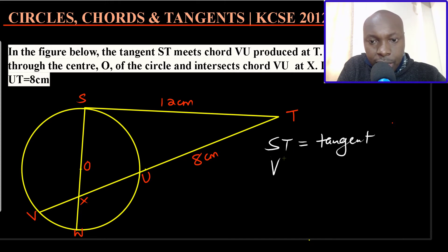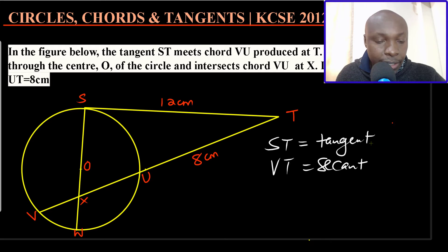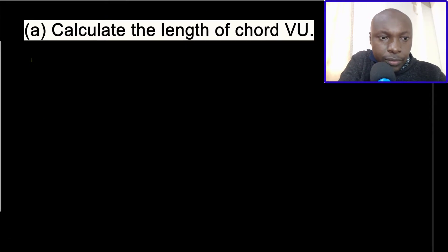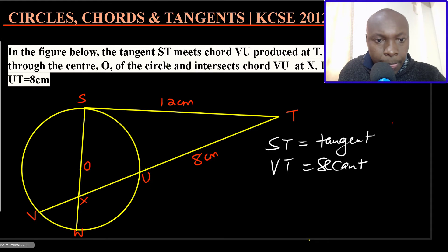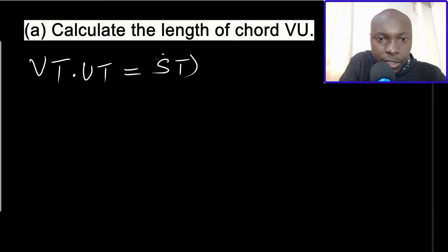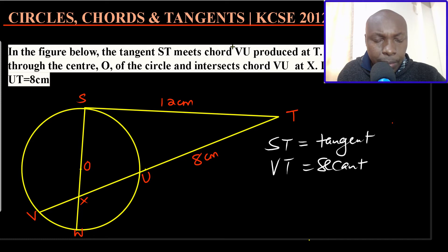VT is part of the secant line. The property that connects the tangent and the secant is the one we are going to use. That property states: VT multiplied by UT should equal ST squared. That is the property that relates the tangent and the secant of a circle.